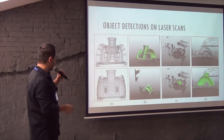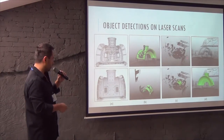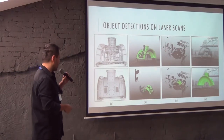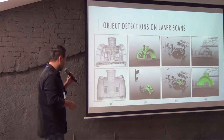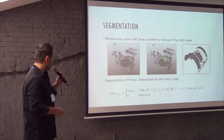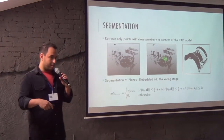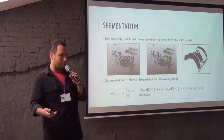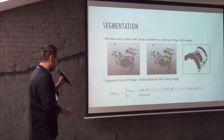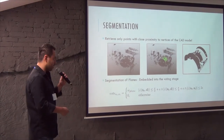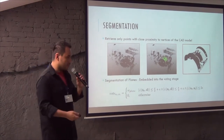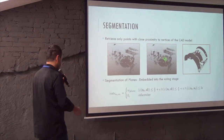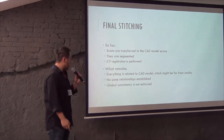Here are some detections on actual laser scans. It's pretty cluttered — just points around — this is really a bad scene. And you can still get the object nicely. Given the object detection, you can segment the object. This has been studied over and over in computer vision. You can do a very simple sampling — just take the ones which are close — or graph cut approaches and so on.